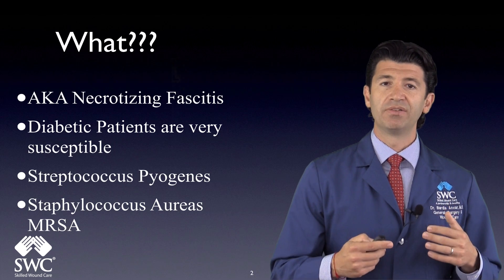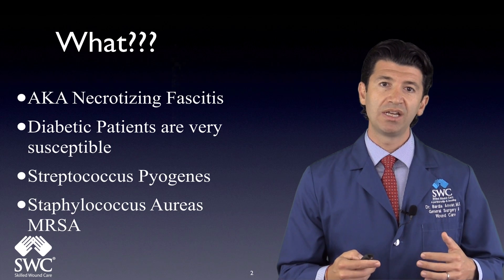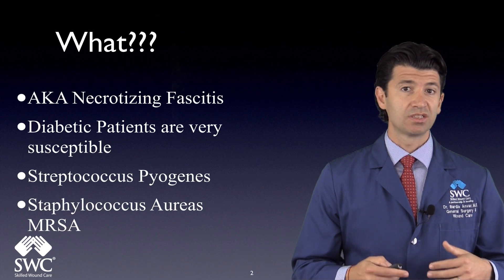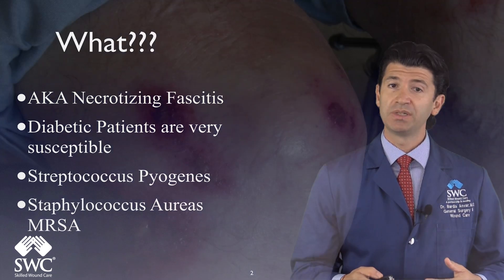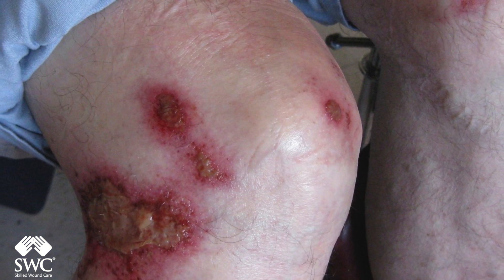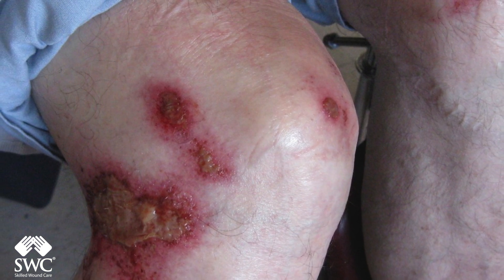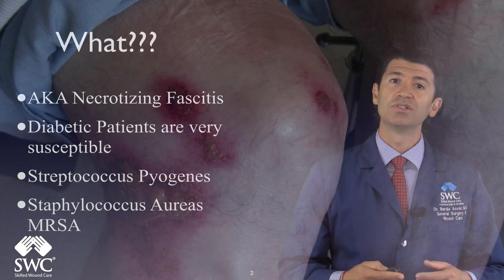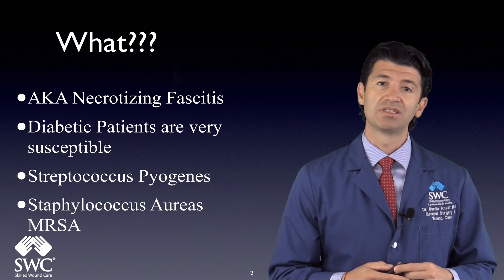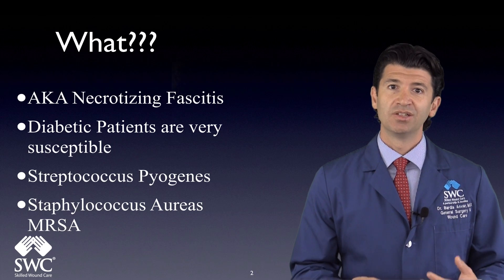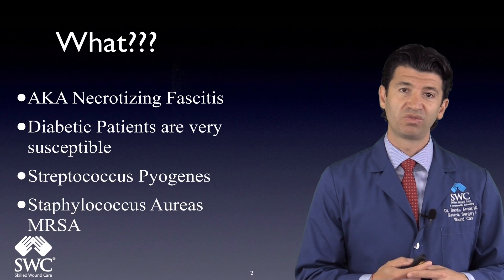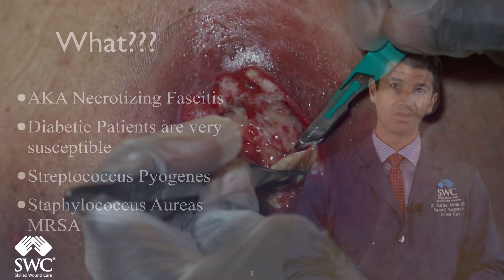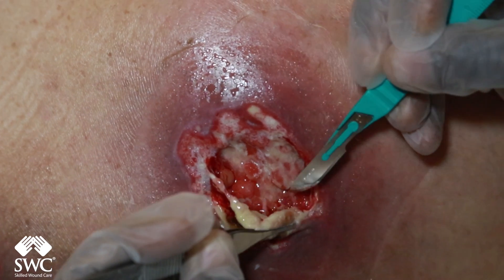If patients have a cut or scrape and the infection progresses and gets worse — especially in certain patients — and you see the skin has broken down all the way down to the muscle and fascia, that's when you're seeing necrotizing fasciitis, commonly referred to as flesh-eating bacteria. You have to manage this very, very quickly or it could get really bad.